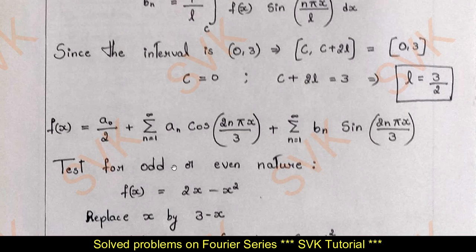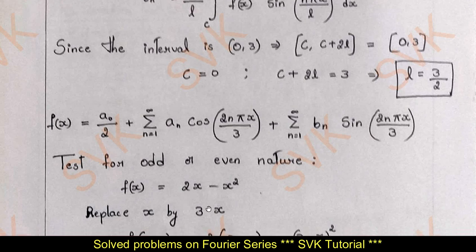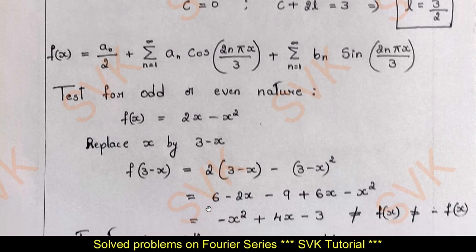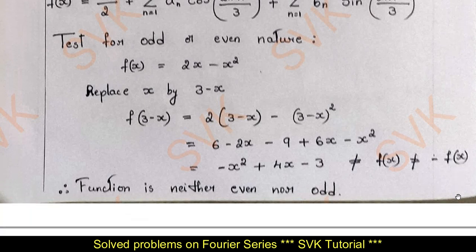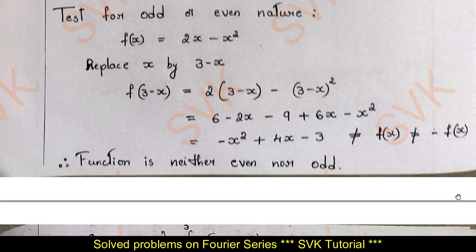Now I am going to check for even or odd. Considering f(x) and replacing x by 3 − x, if we get back f(x) or −f(x), we can determine even or odd. But in this case we get neither f(x) nor −f(x), so we say it is neither even nor odd.